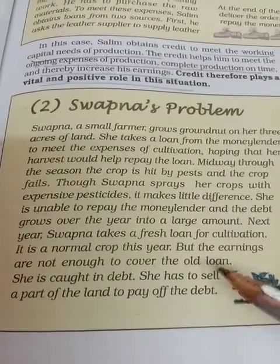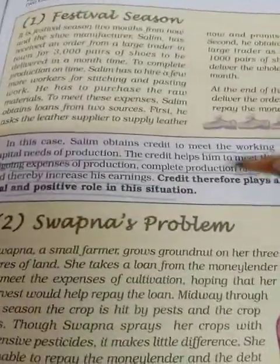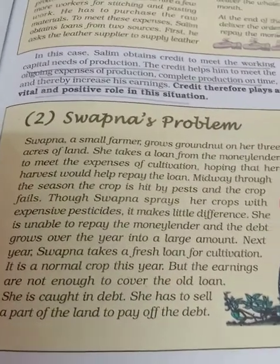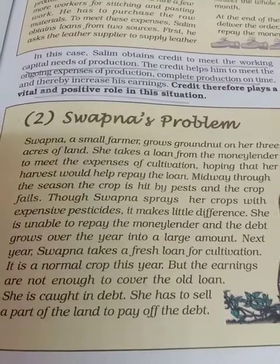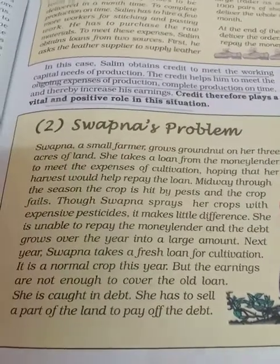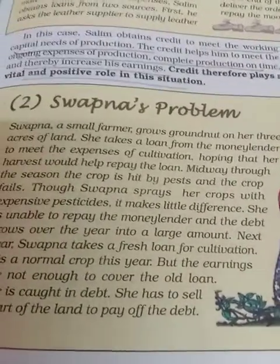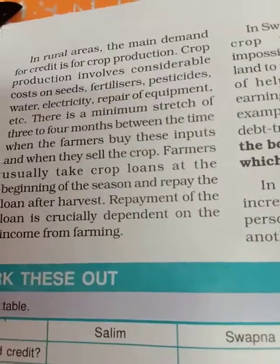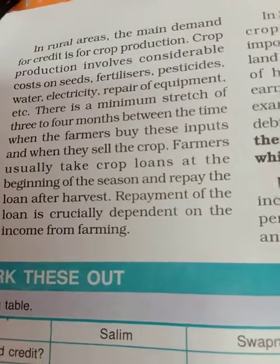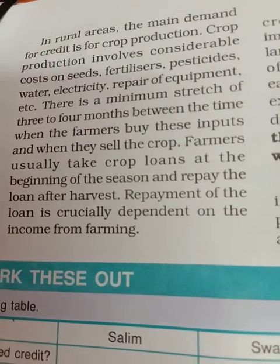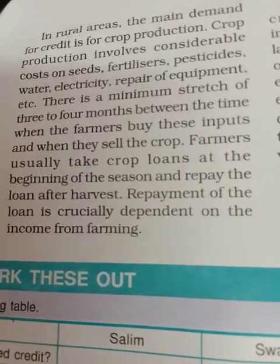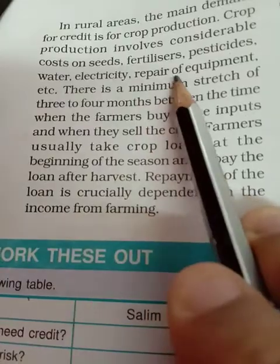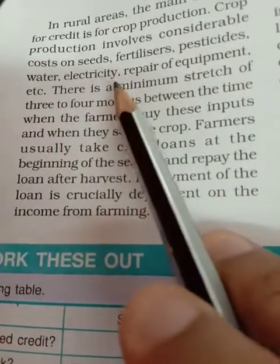This is a very different situation from Salim's. When things go well, credit is very fruitful, but when things do not go well, credit becomes a very bad situation for borrowers. Swapna was not able to generate enough profit to pay the loan. So credit, instead of helping Swapna improve her earnings, left her worse off. This is the example of what is commonly called a debt trap.